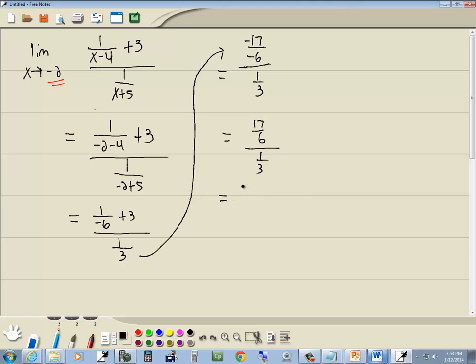And what this means is 17 over 6 divided by 1 third. We flip the second fraction, the 1 over 3 becomes 3 over 1. And the 3 and 6 are both divisible by 3. 3 divided by 3 is 1, 6 divided by 3 is 2. 1 over 1 drops away, and our answer is going to be 17 halves.